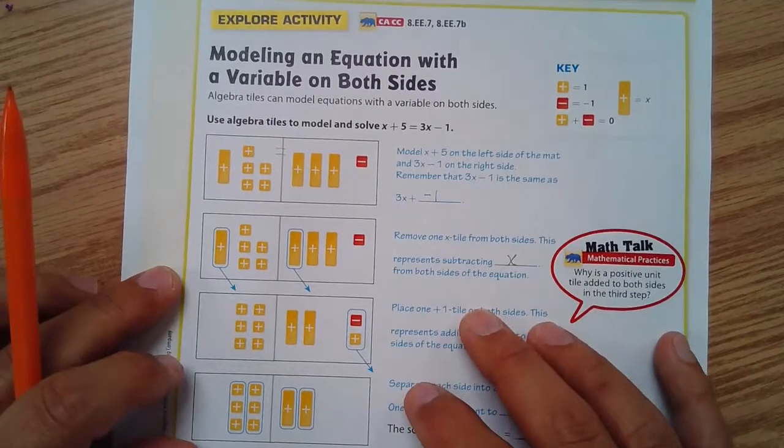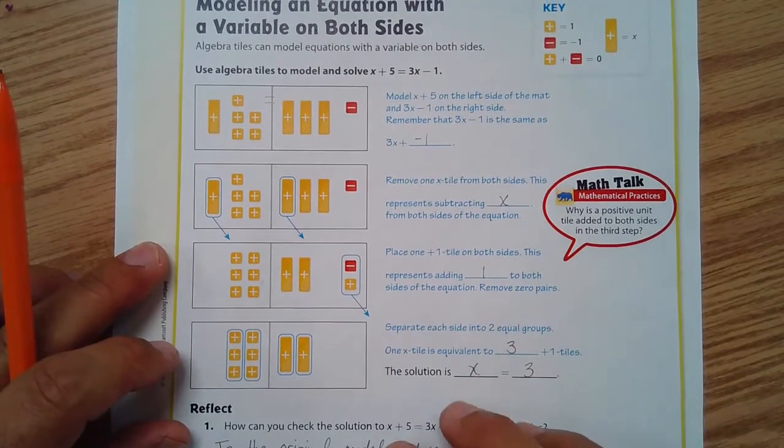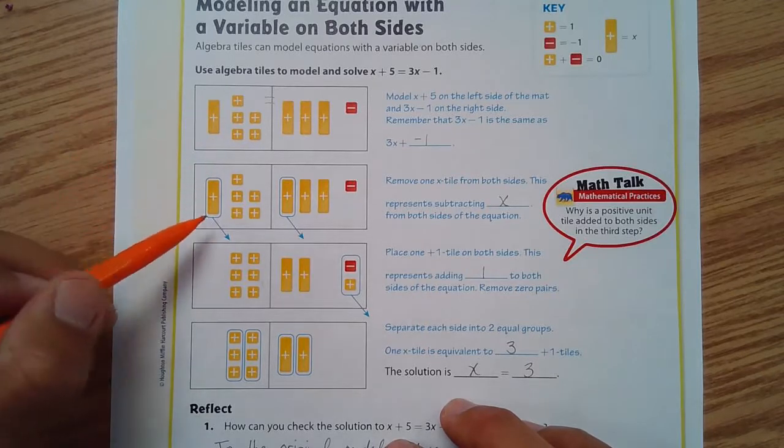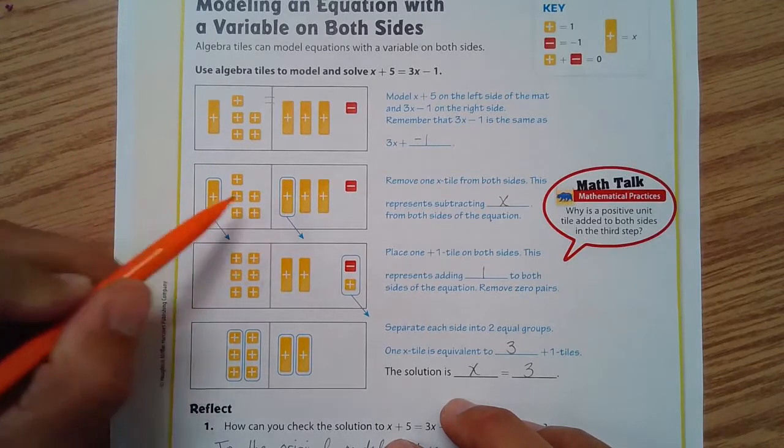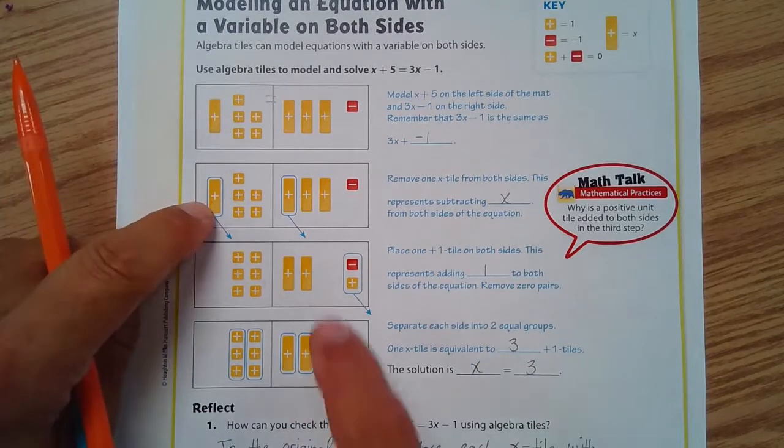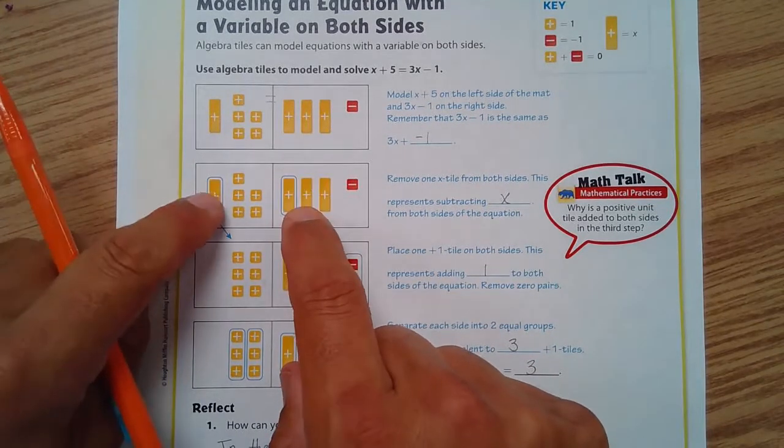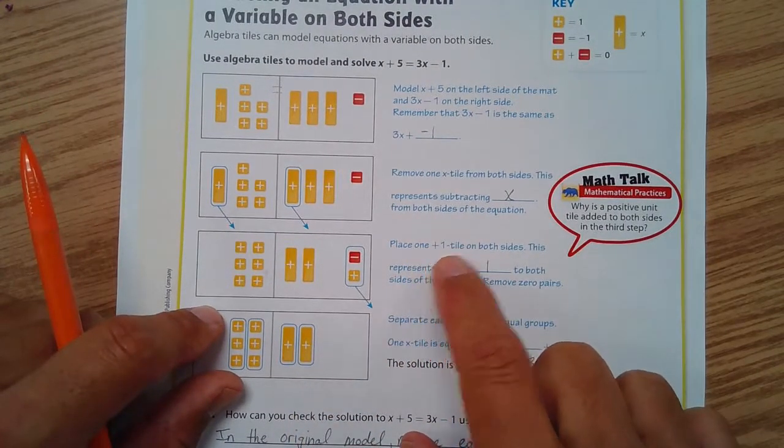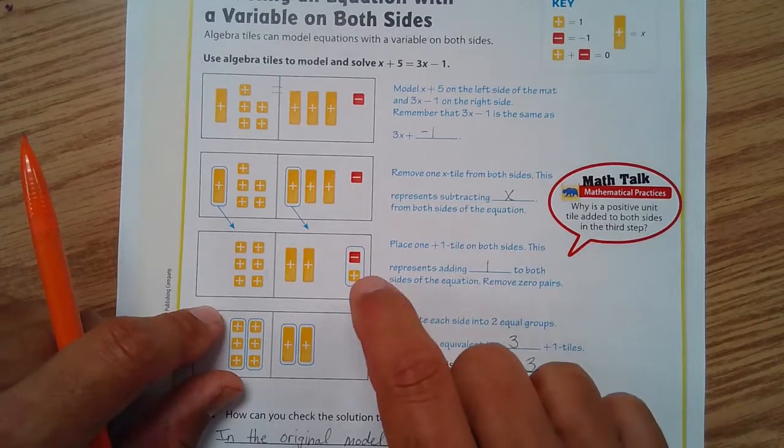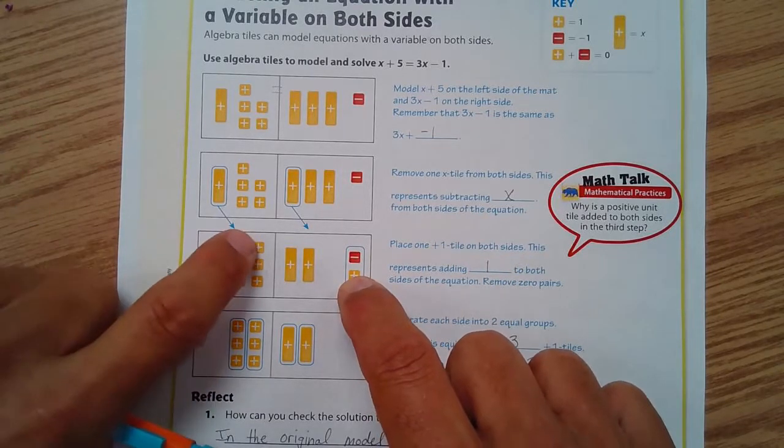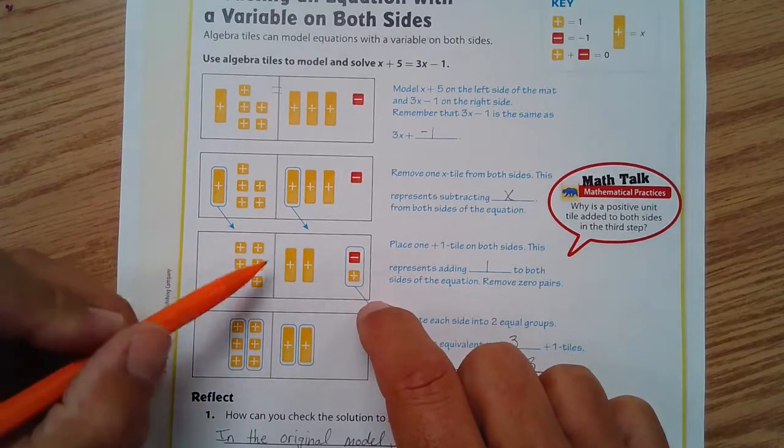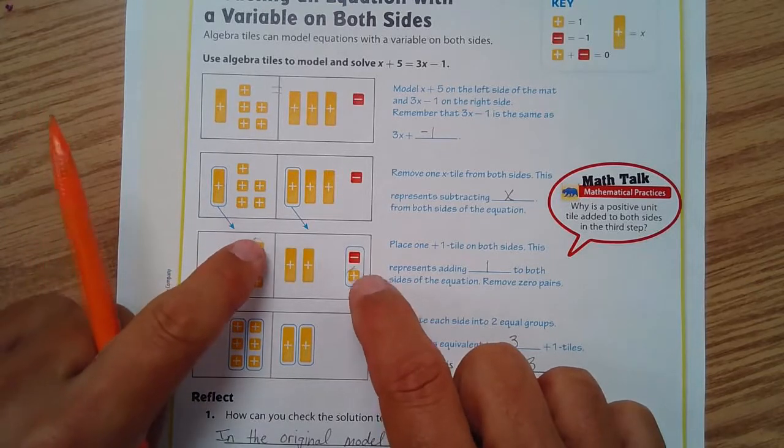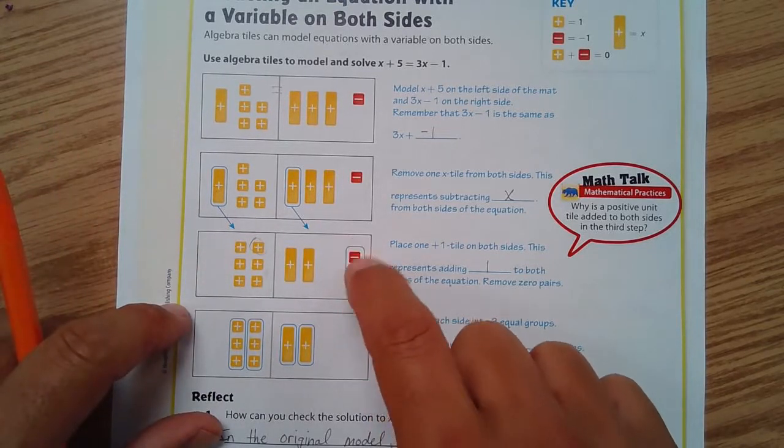Our goal here is to figure out what is the value of one of these x's. We can remove one from each side—what you do to one side you have to do to the other to maintain balance. Then we can place a positive one tile on both sides, so that's what was done right there. Still doing the same thing on both sides of the equal sign.